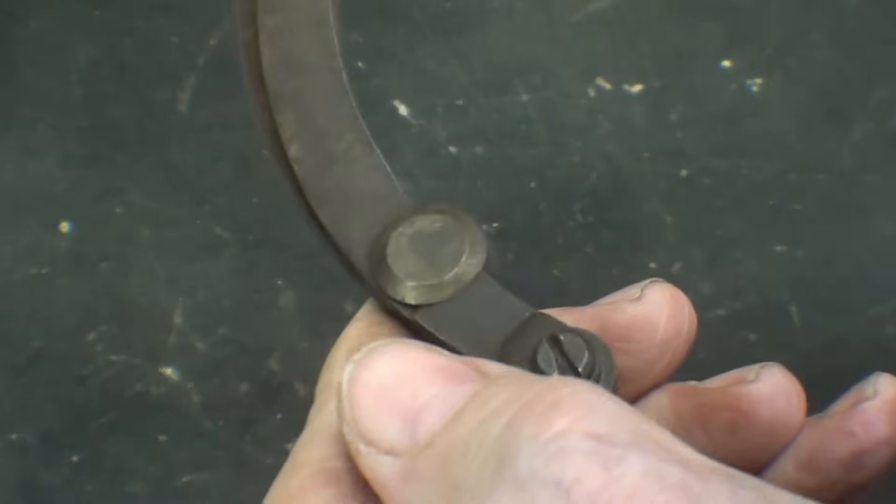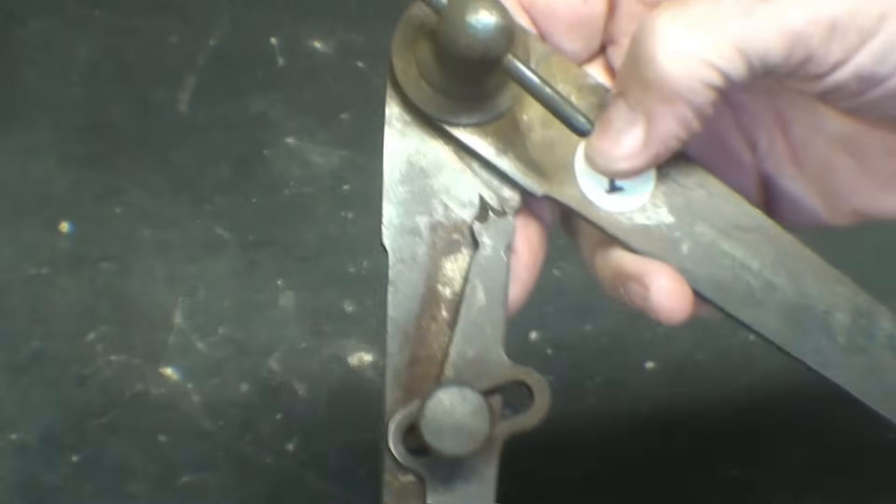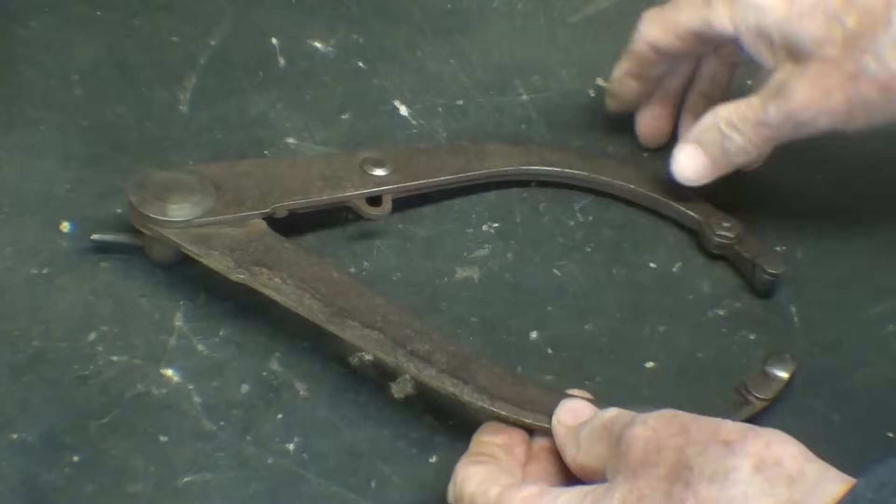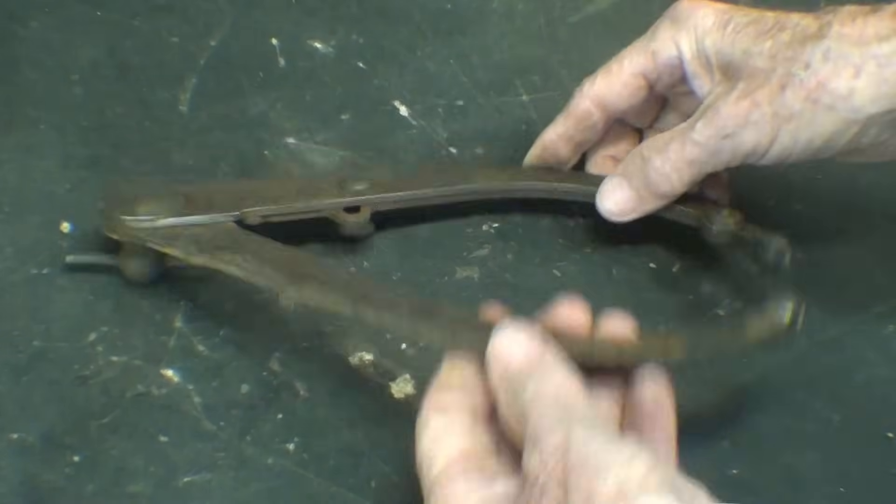But you can see there's a pivot point here with a nut. I think that might be brass. No, I guess it's steel. But what is this for?